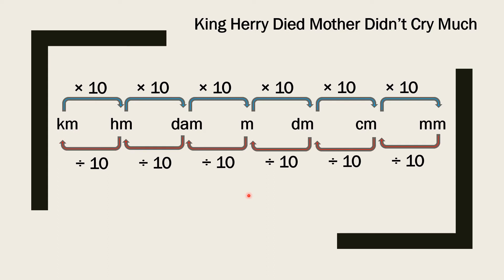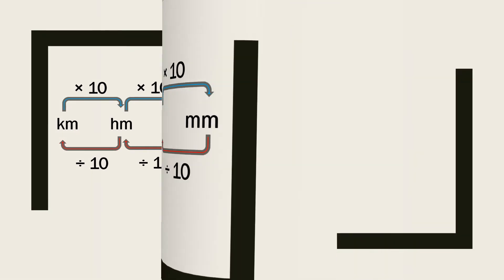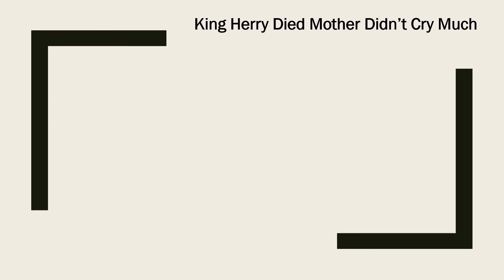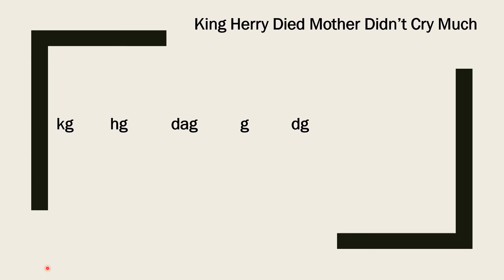By this method, you can make many other conversions as well. Just like for length, you use the same sentence — 'King Harry Died, Mother Didn't Cry Much' — to learn all units of mass. K stands for kilogram, H stands for hectogram, D stands for decagram, M stands for gram (the basic unit of mass), then decigram, centigram, and milligram.